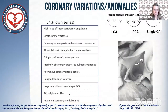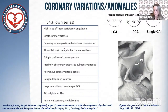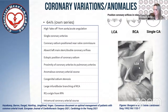We also see quite common coronary variations and anomalies — about 64% in our own series — including high takeoff, single coronary arteries, coronary ostia positions near valve commissures, absent left main, double coronary orifices, and ectopic positions well above the sinotubular junction. These have been summarized in a consensus document published last year, working together with Joanna and a working group on the management of patients with common arterial trunk.